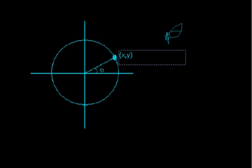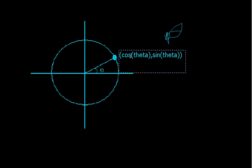Well, basically what this is — is this is cosine of theta and sine of theta. You might have known that already, but if not, then I taught you something. So what that is: if you look at this point right here, it is cosine of theta in this direction, and it's sine of theta high.